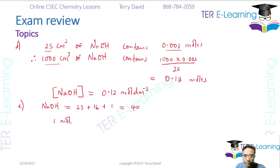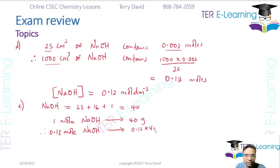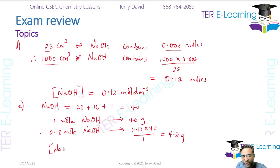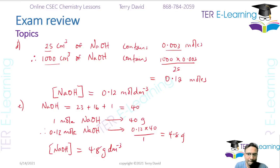So 1 mole of NaOH has a mass of 40 grams. Therefore, for 0.12 moles: 0.12 × 40 ÷ 1 = 4.8 grams. So the concentration of NaOH in g per dm³ is 4.8 g per dm³.